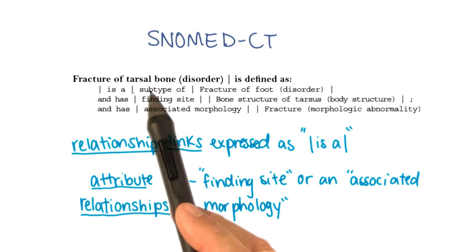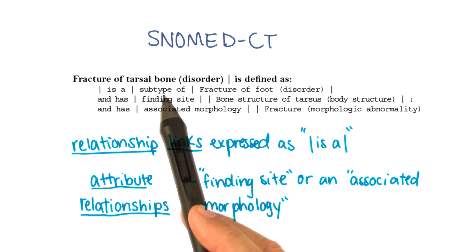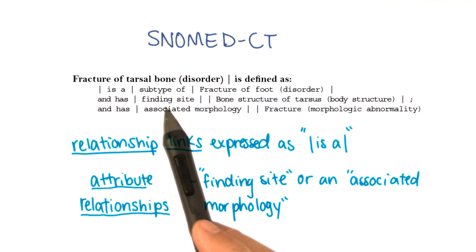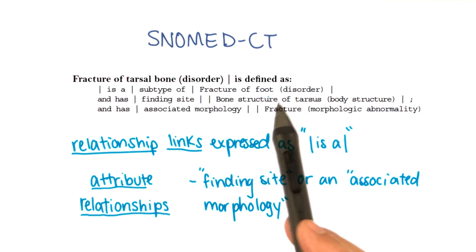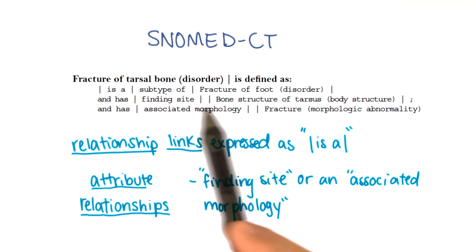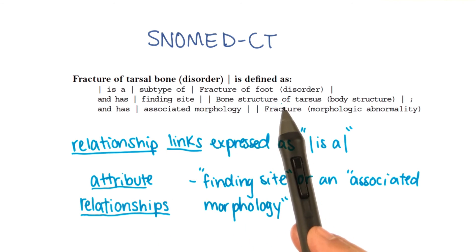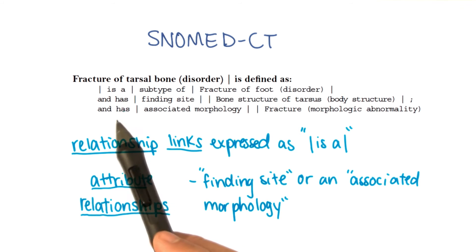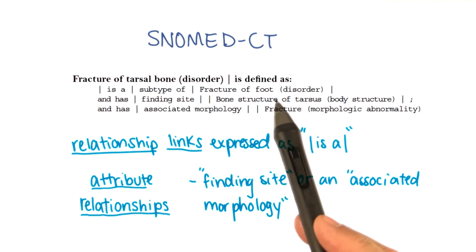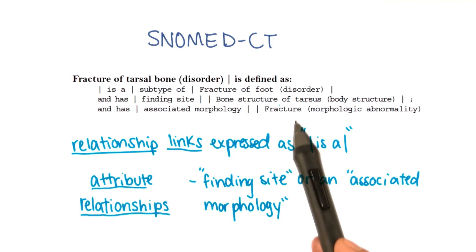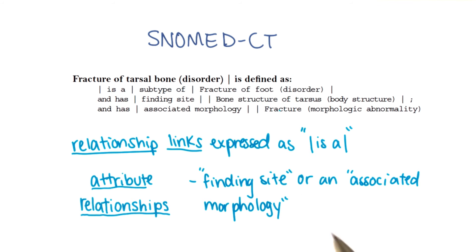So a fracture of the tarsal bone is a subtype of a fracture of the foot. The tarsal bone is part of the foot and has a finding site and an associated morphology — the location of the fracture and the fact that it is, in fact, a fracture.